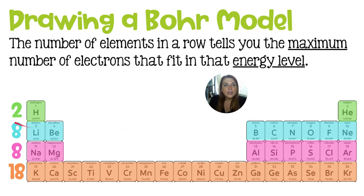To reiterate, the row or the period of the periodic table will indicate the maximum number of electrons that will fit in its corresponding energy level. So in level one, we can fit two electrons. In level two, we can fit eight electrons as indicated by the eight elements in that period.